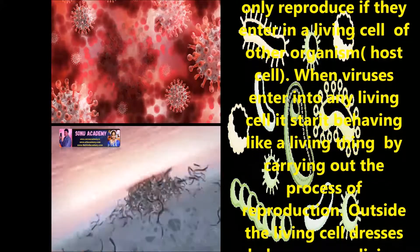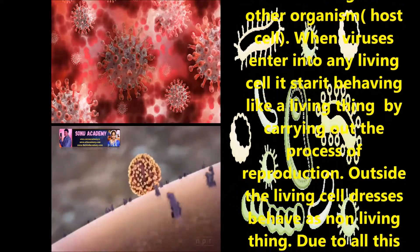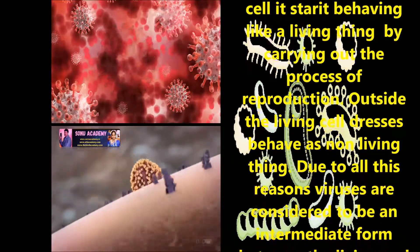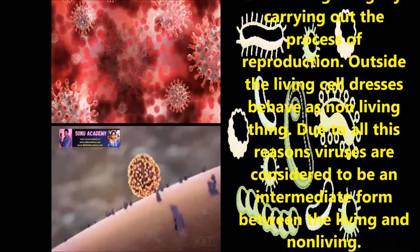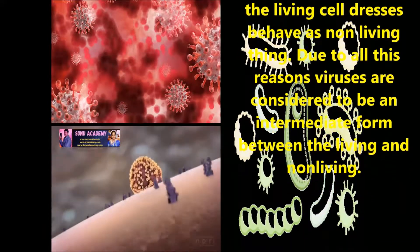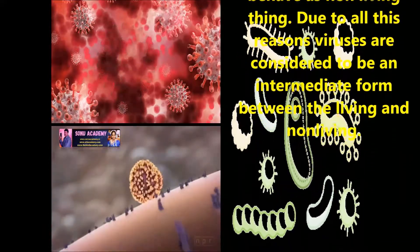Virus can only reproduce if they enter in a living cell of another organism. When virus enters into any living cell, it starts behaving like a living thing by carrying out the process of reproduction.